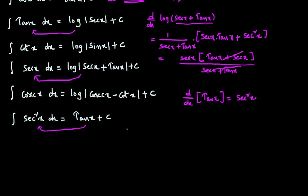The next formula is integral of cosecant squared x dx. Integral of cosecant squared x dx is minus cot x plus c. Why? You differentiate the right-hand side, minus cot x plus c — you will get cosecant squared x. Because of that reason, we say integral of cosecant squared x dx is minus cot x plus c. From now onwards, we take these things as formulas.